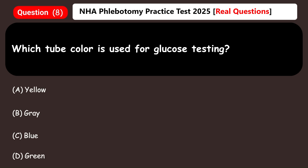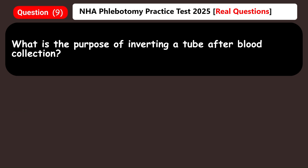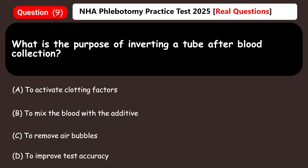Which tube color is used for glucose testing? A) Yellow, B) Gray, C) Blue, D) Green. Answer: B) Gray. What is the purpose of inverting a tube after blood collection? A) To activate clotting factors, B) To mix the blood with the additive, C) To remove air bubbles, D) To improve test accuracy. Answer: B) To mix the blood with the additive.